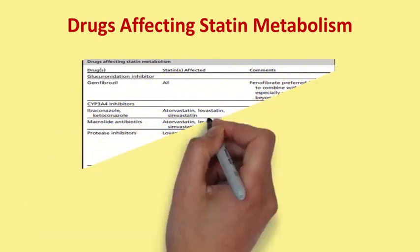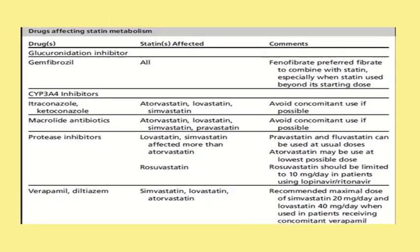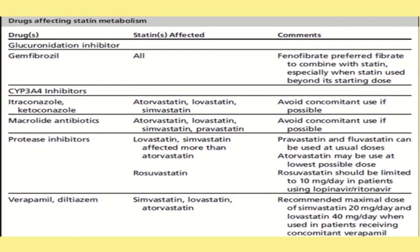Drugs affecting statin metabolism include glucuronidation inhibitors such as gemfibrozil, which cannot be used with all statins. Phenofibrate is the preferred fibrate to combine with statins, especially when the statin is used beyond its starting dose — more than 25% of the full dose. For example, atorvastatin has a maximum dose of 80mg; using more than 20mg combined with gemfibrozil increases the risk of statin-induced myopathy. This applies to all statins.